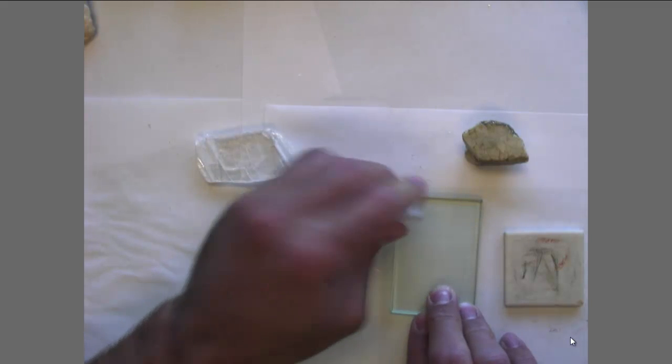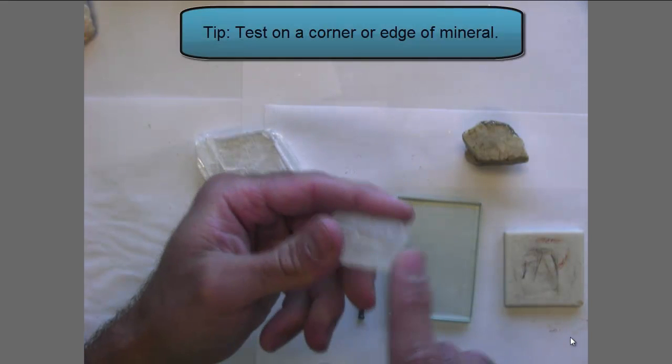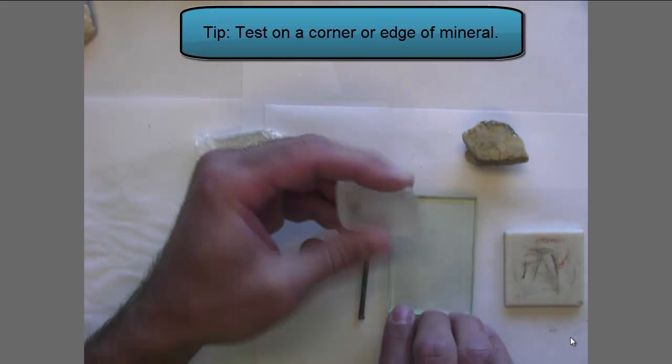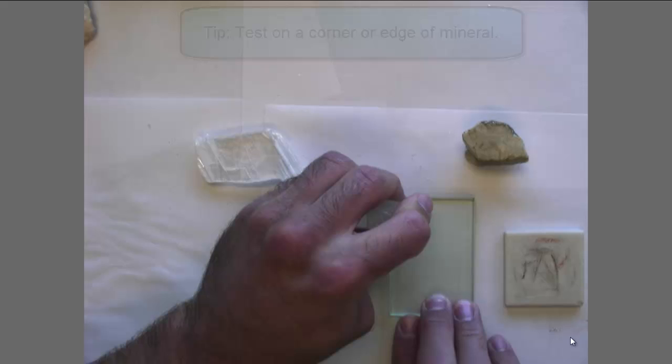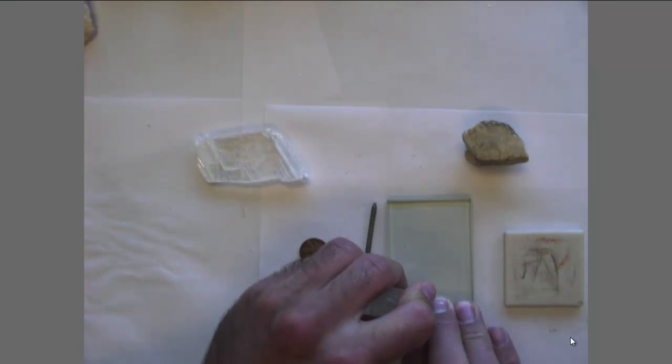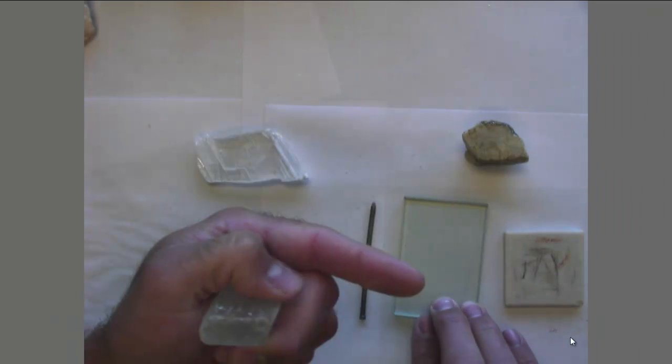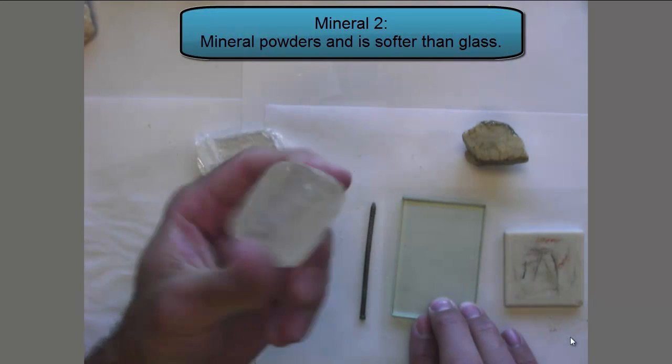Let's go with this next piece. Hold it down. And I usually look for a corner or an edge. Don't do it on the flat surfaces this way. Push down hard until either this powders or it scratches it. And again, some white powder. This is softer.